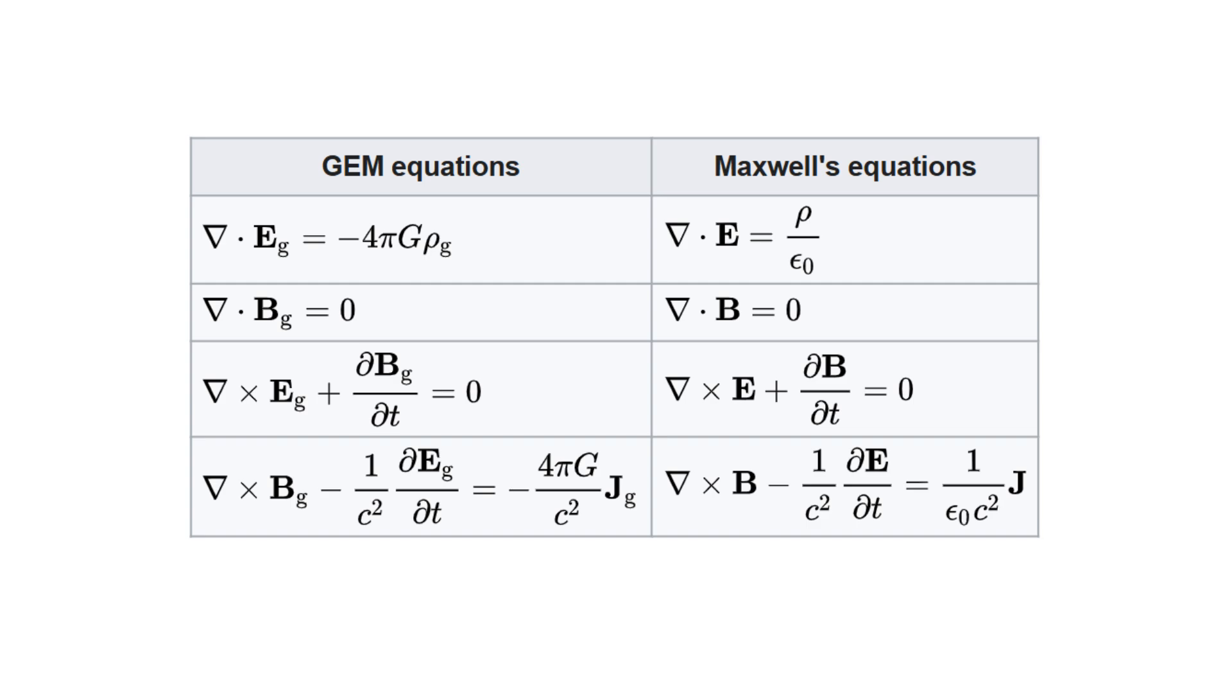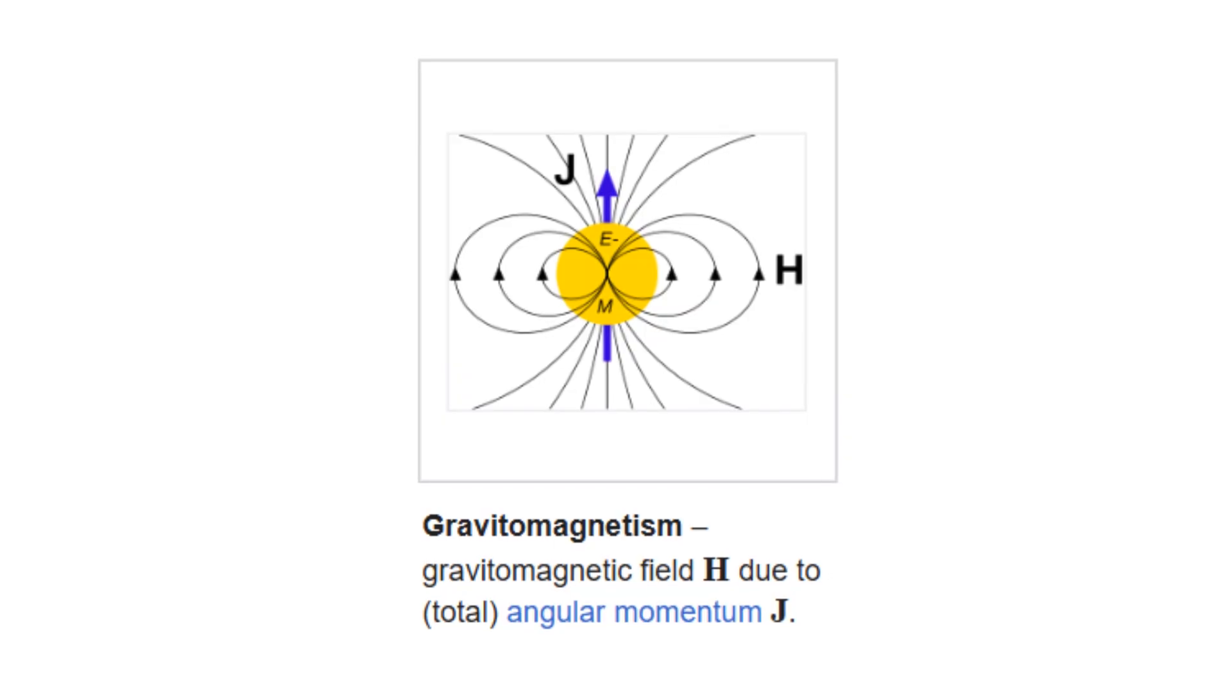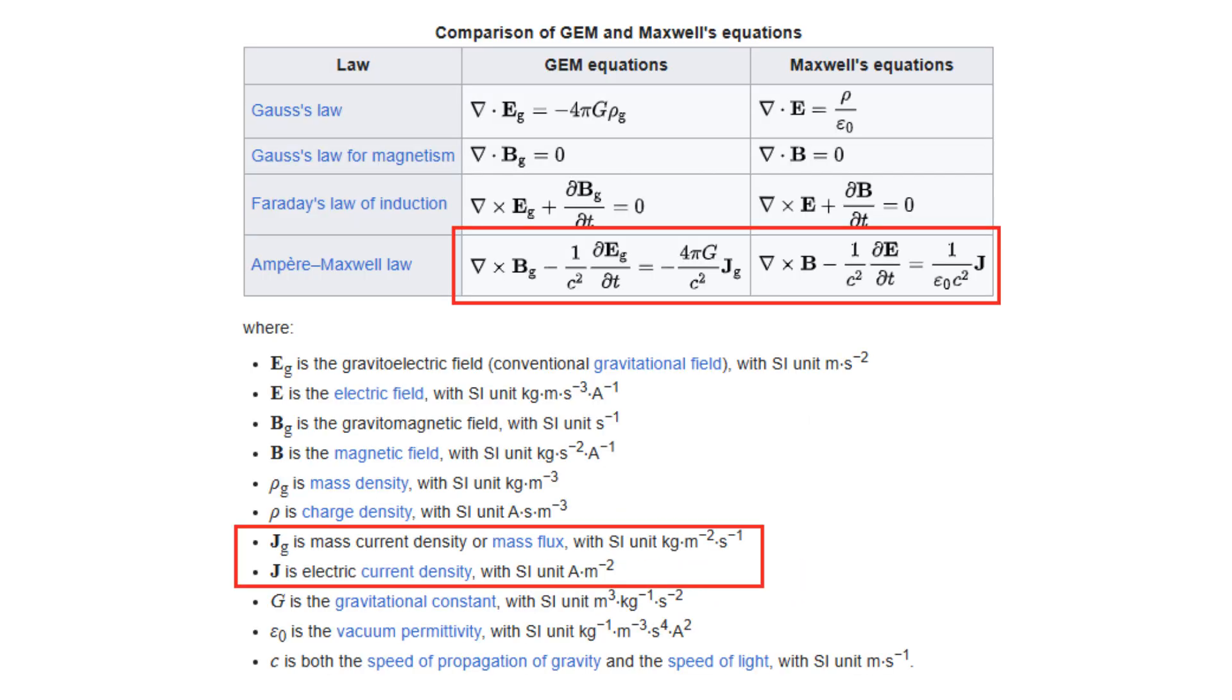mass currents of moving or rotating masses generate a gravitomagnetic field, analogous to the magnetic field from electric currents. But the sign of the force law differs from electromagnetism.